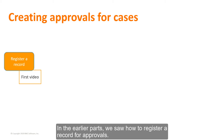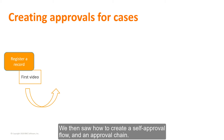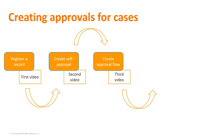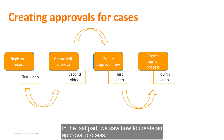In the earlier parts, we saw how to register a record for approvals. We then saw how to create a self-approval flow and an approval chain. In the last part, we saw how to create an approval process.